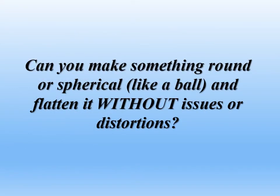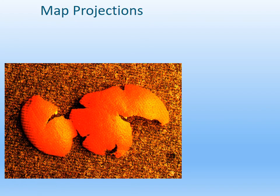Before we do that, my question for you is: can you make something round or spherical like a ball and flatten it without issues or distortions? The answer is no. The reason I bring this up is it comes into play when we deal with map projections. So imagine you had an orange and you peeled that orange, then took the orange peel and tried to flatten it out. As you can tell, you have tears in that orange peel.